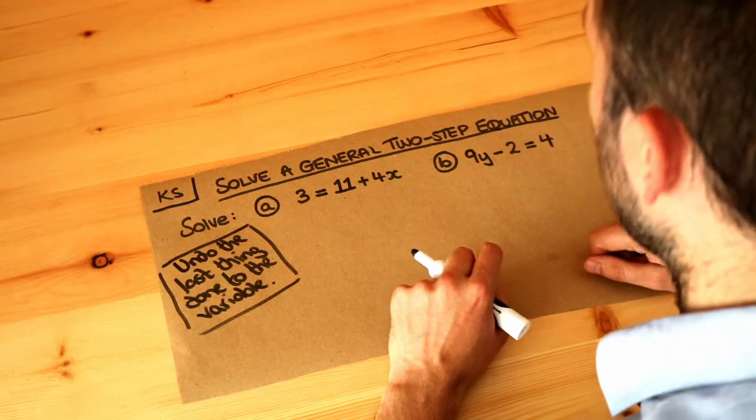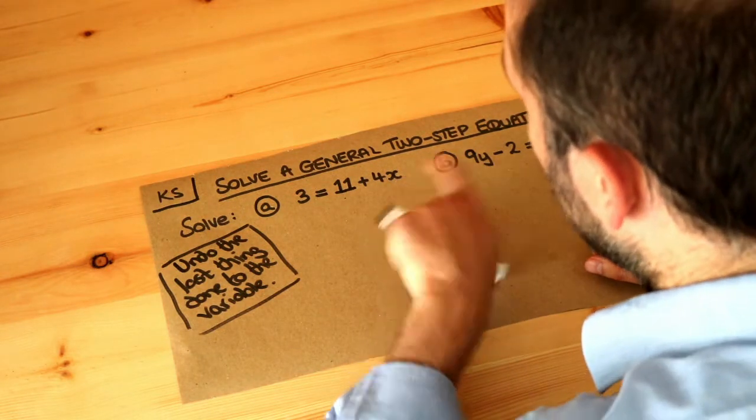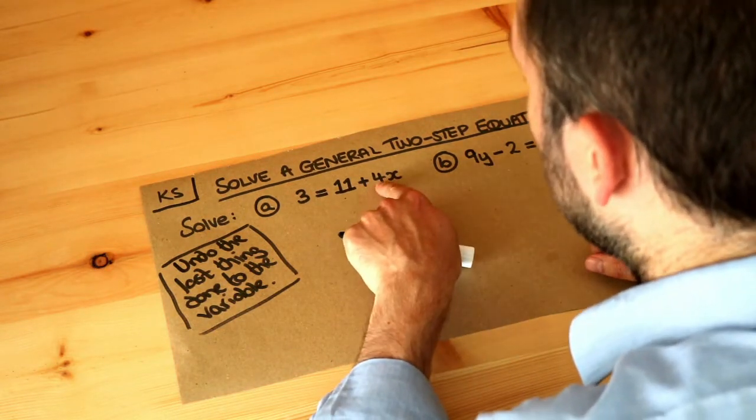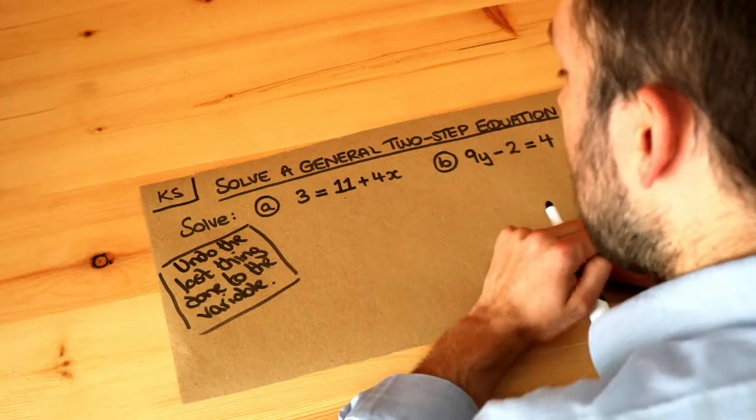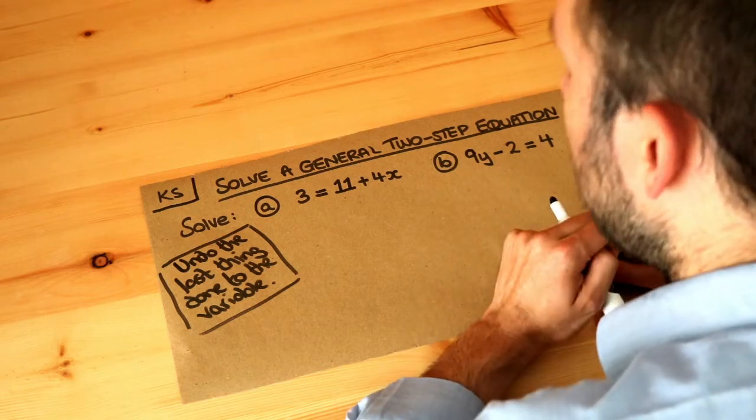To solve this equation means we want to find out what's the value of x. If we did 11 plus 4 times some unknown value and that gave us 3, what is the value of x? That's what it means to solve the equation.